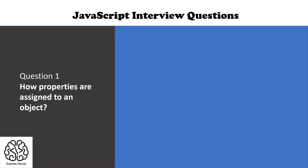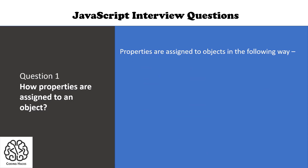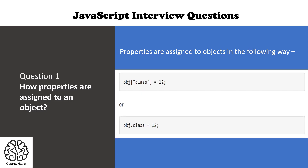Our first question is: how are properties assigned to an object? There are different ways — we can use square brackets as well as the dot operator to assign any property to an object.